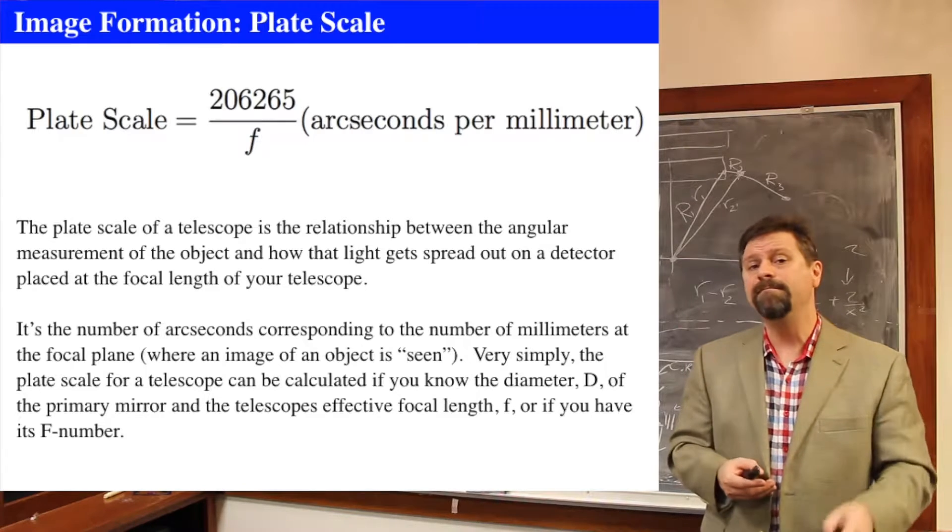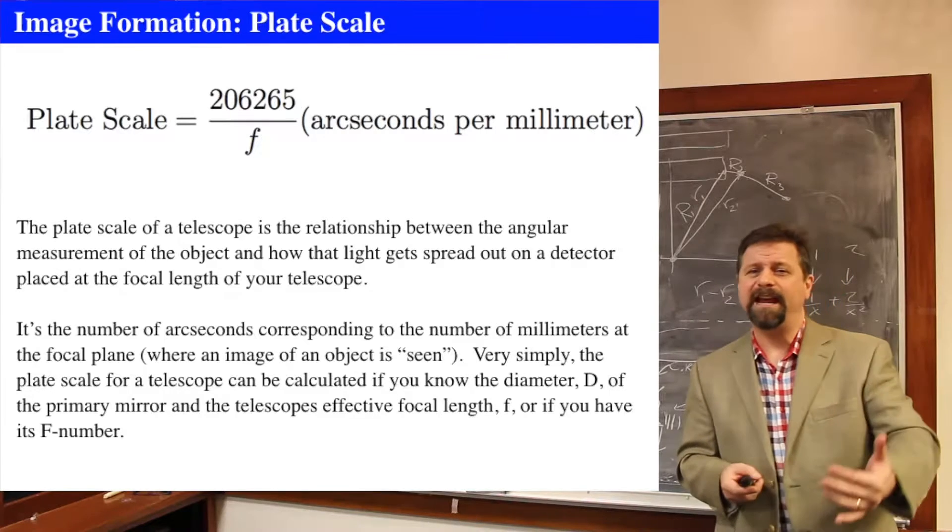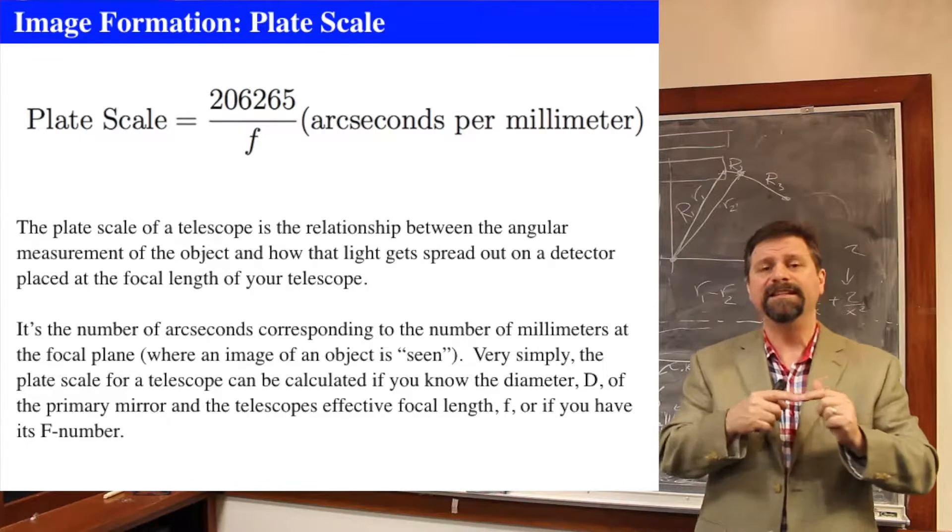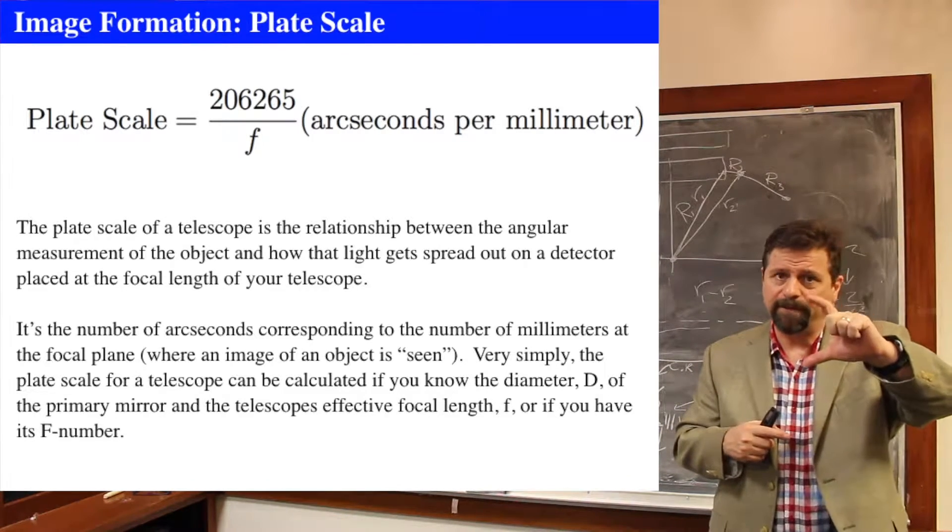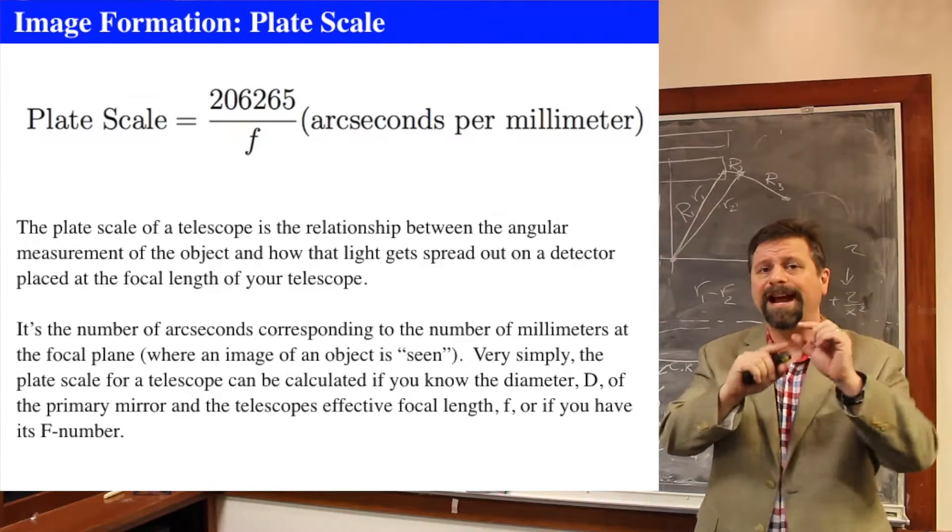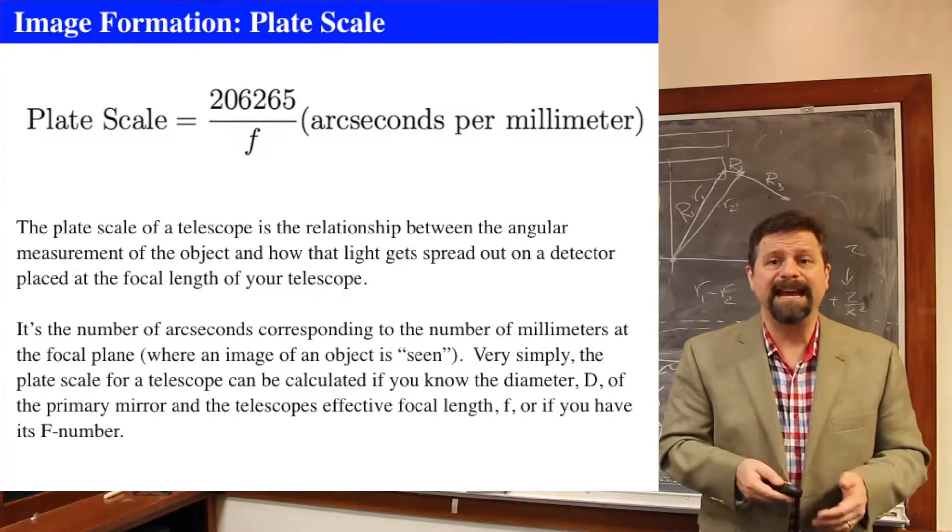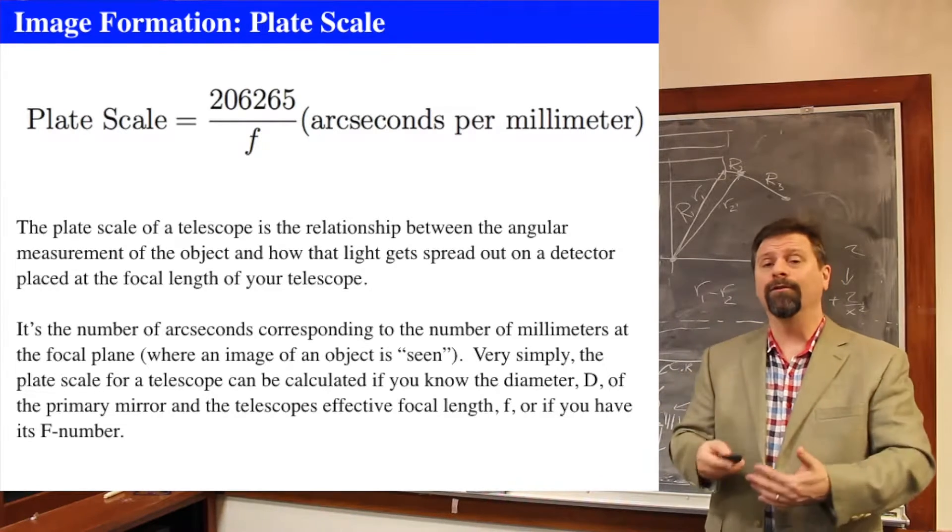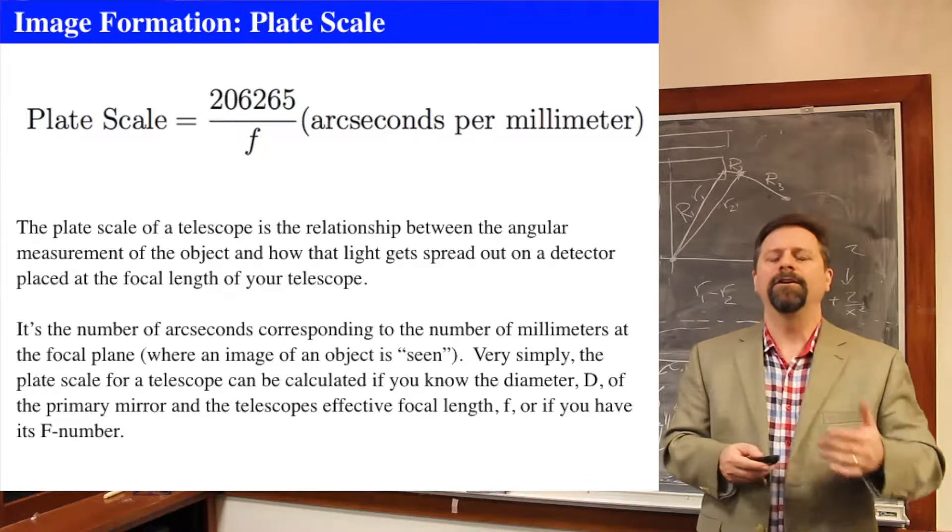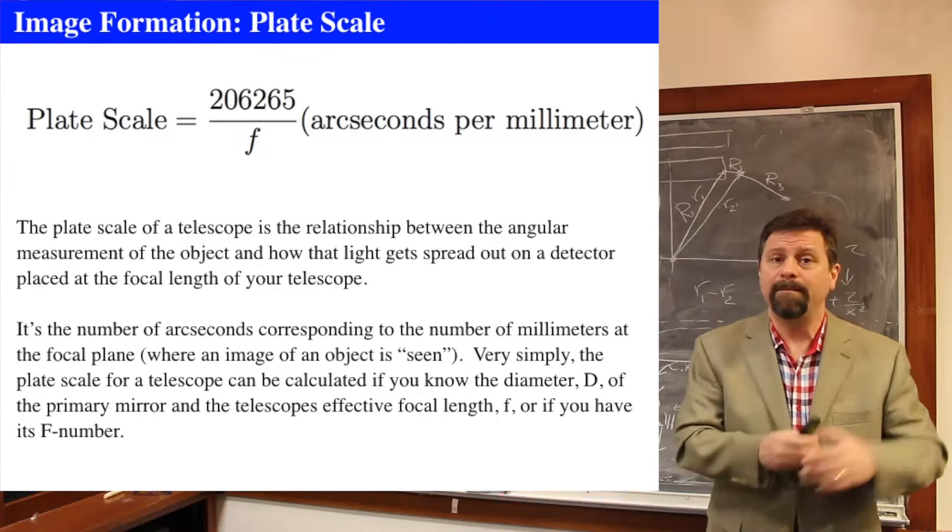The plate scale can be measured in terms of arc seconds of the sky per millimeter of the detector. So you're going to say how many arc seconds are there present on this diameter of the detector per millimeter of detector. Your detector could be this big or this big or that big. We want to know per millimeter on the detector, how many arc seconds there are. And that's called the plate scale. It's dependent on the focal length.